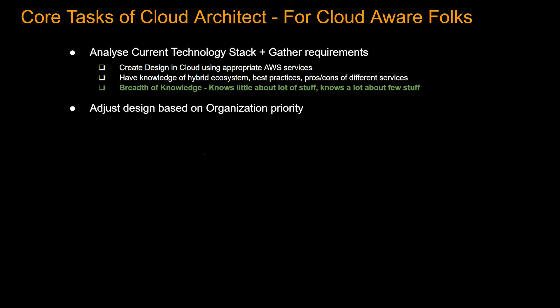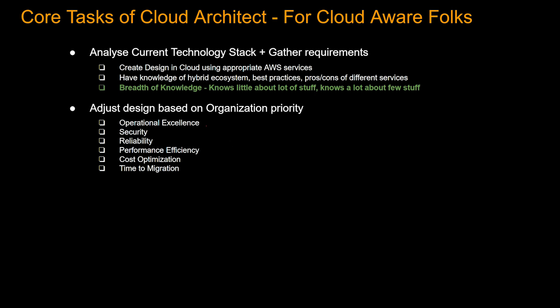A cloud architect can adjust design based on organization priority. There are different pillars of cloud architecture: operational excellence, security, reliability, performance efficiency, cost optimization, time to migration, etc. Based on the priority of the organization, the design will change.